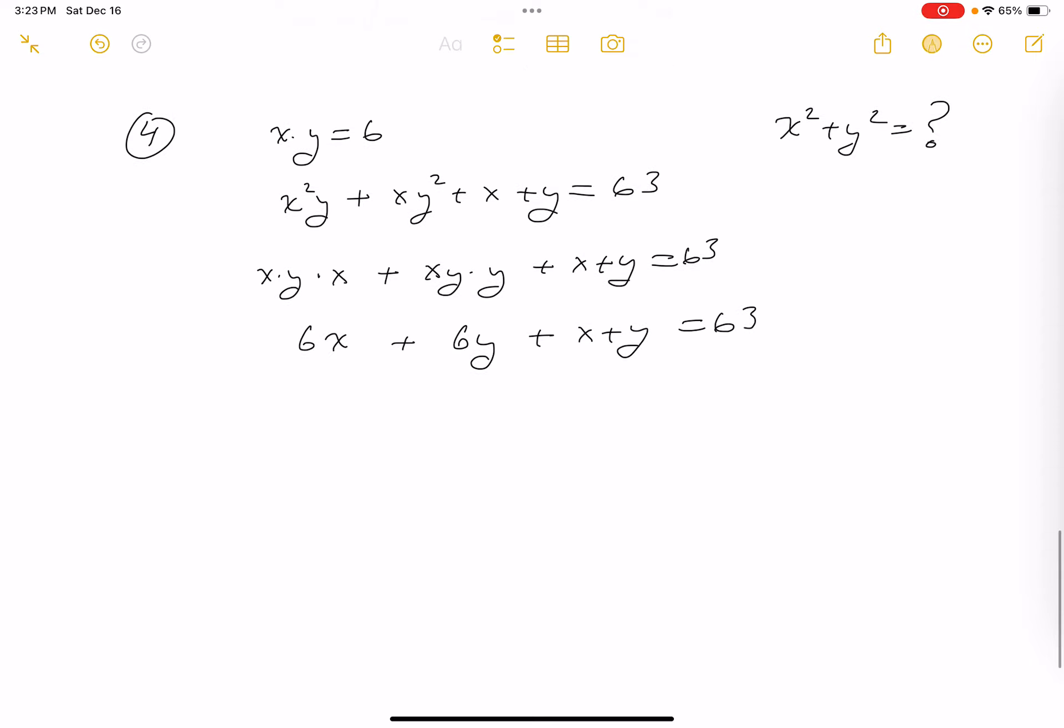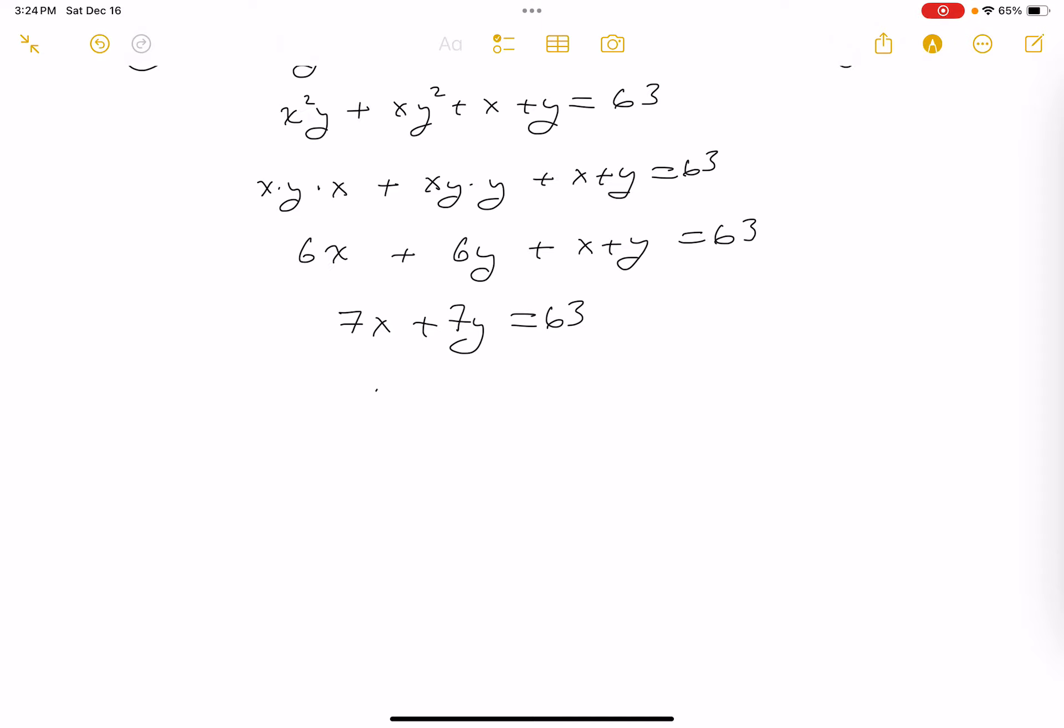Let's keep moving. What do you get? 7x plus 7y equals 63. The next thing I do is divide through by 7. And what do you get? x plus y equals... Well, 7 goes into 63 nine times.